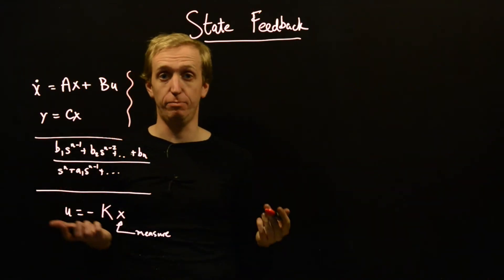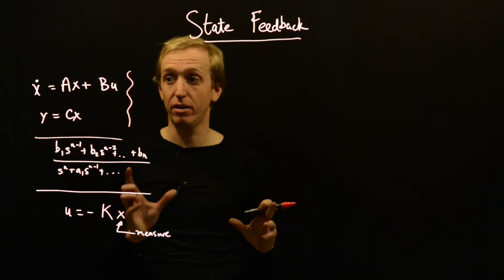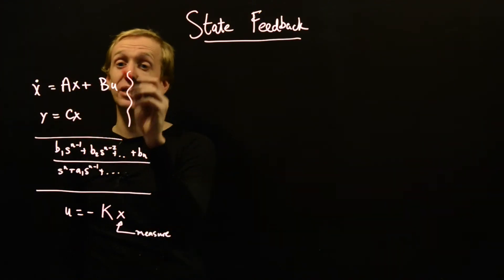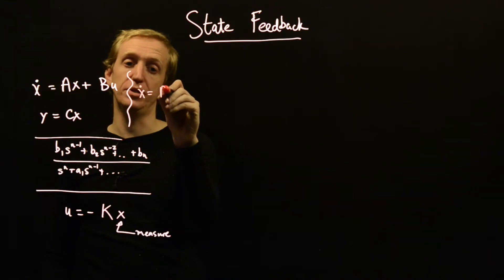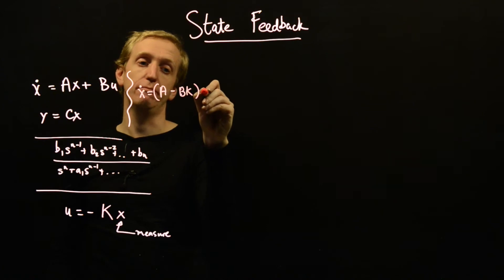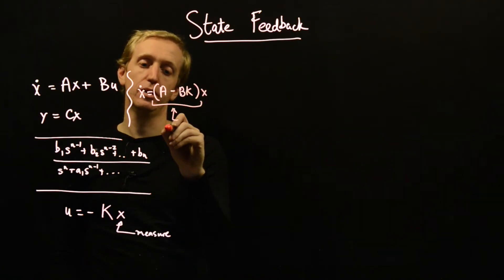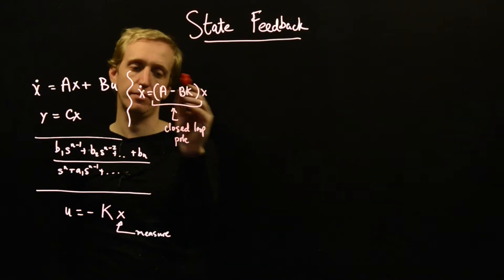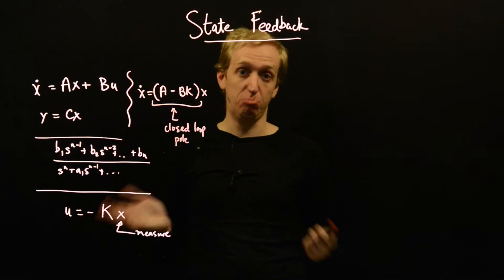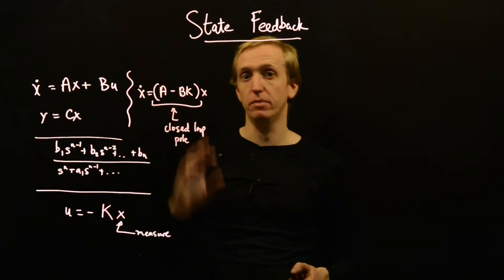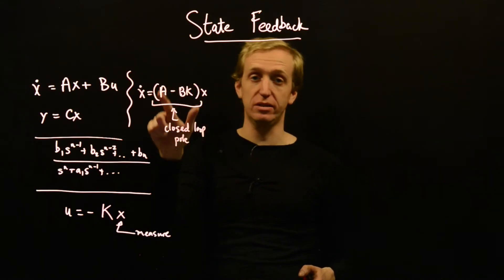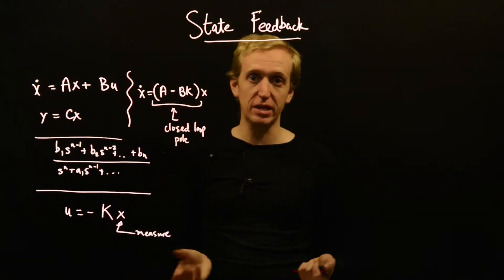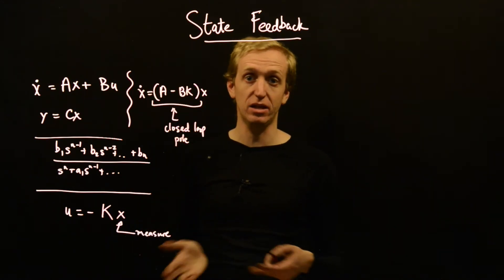So this is our state feedback law and what does it do? Well, it changes the poles and what are the poles? The poles are the location of the eigenvalues. How does it do it? If I just substitute u is equal to minus Kx into this equation, we only need to look at the top equation. We get that x dot is equal to A minus BK multiplied by x. So closed loop poles or eigenvalues correspond to the eigenvalues of this matrix here. What state feedback lets you do is by picking K in an appropriate way you change what this matrix is. Putting different numbers into K changes what this matrix is and this changes where the eigenvalues are. Pole placement works by choosing those entries in such a way that the eigenvalues end up where you want them to be.